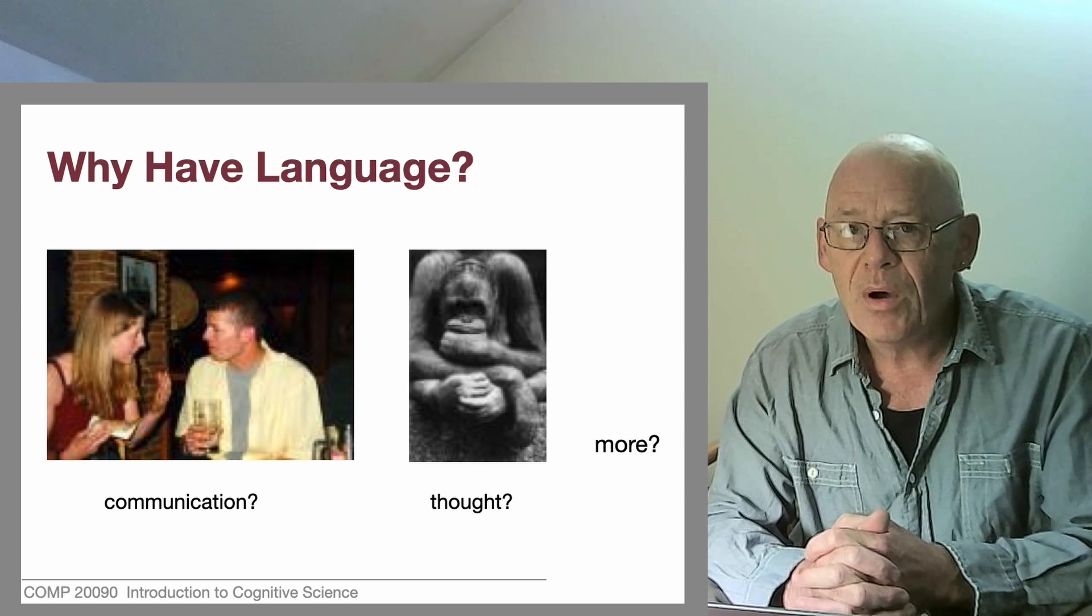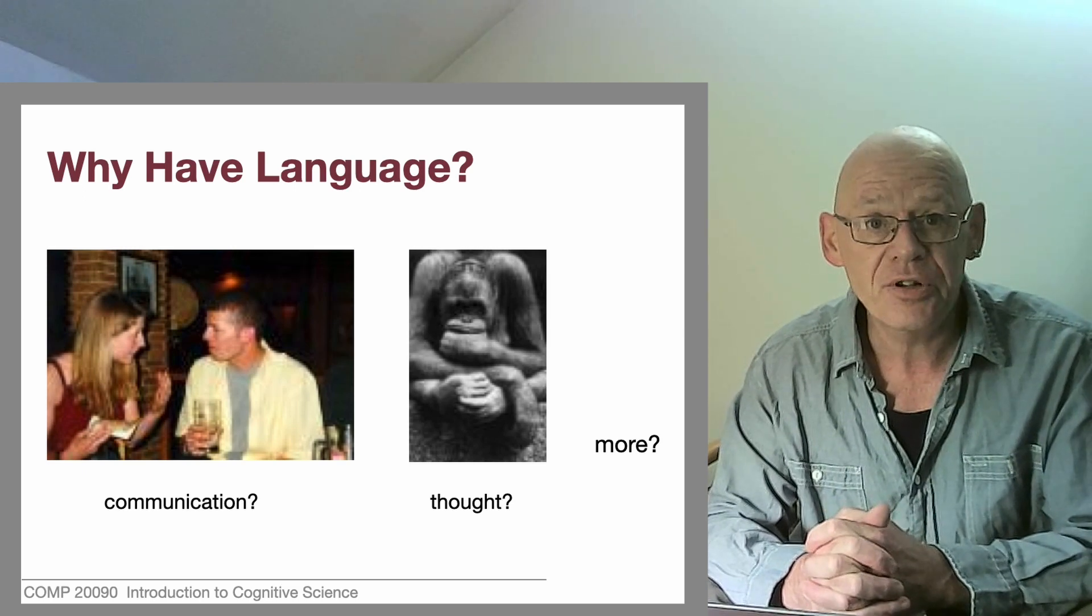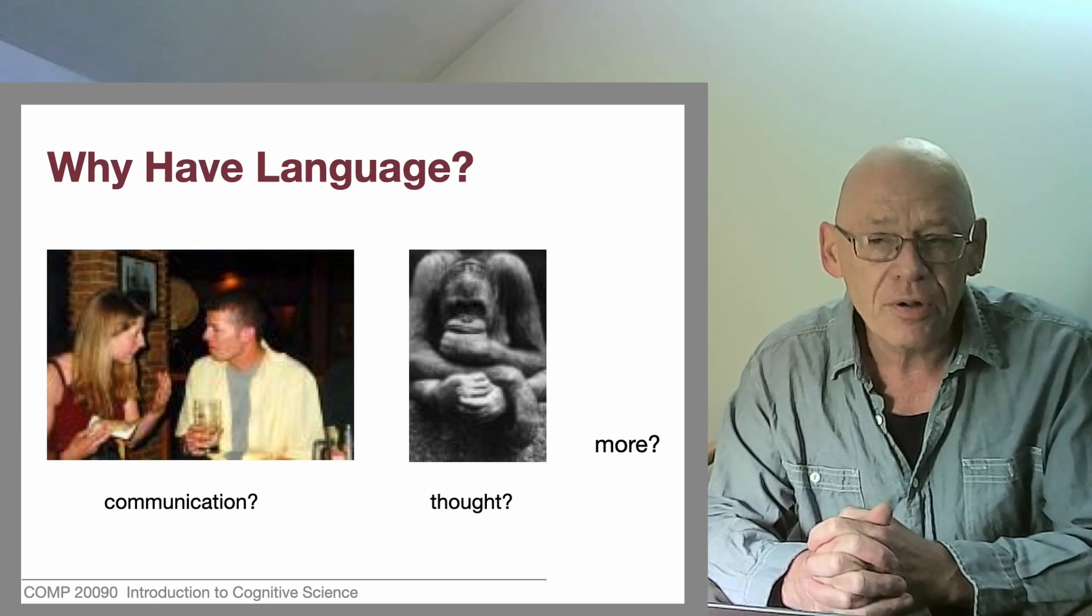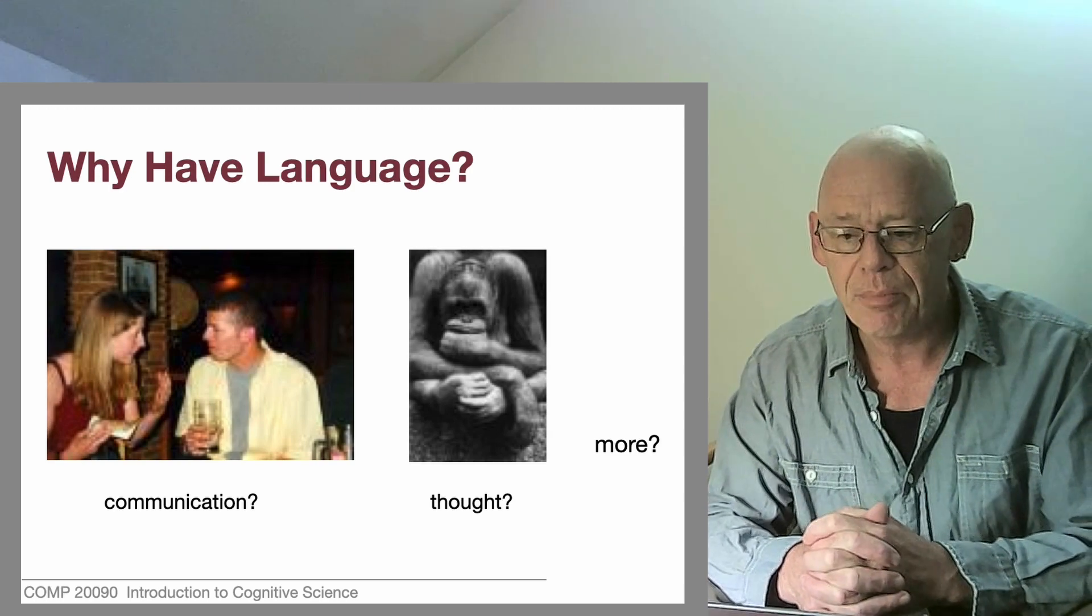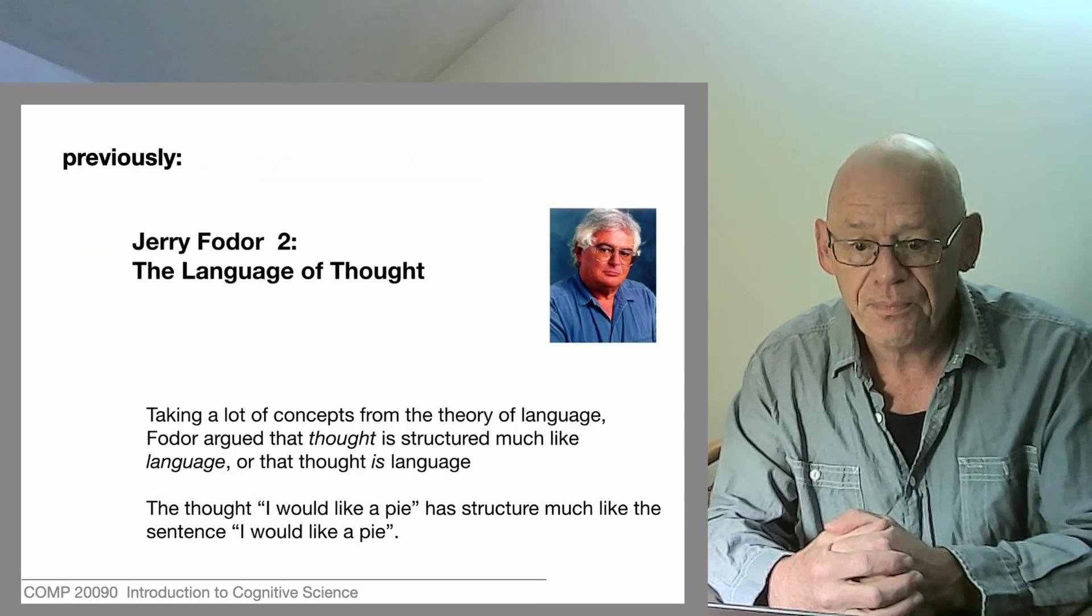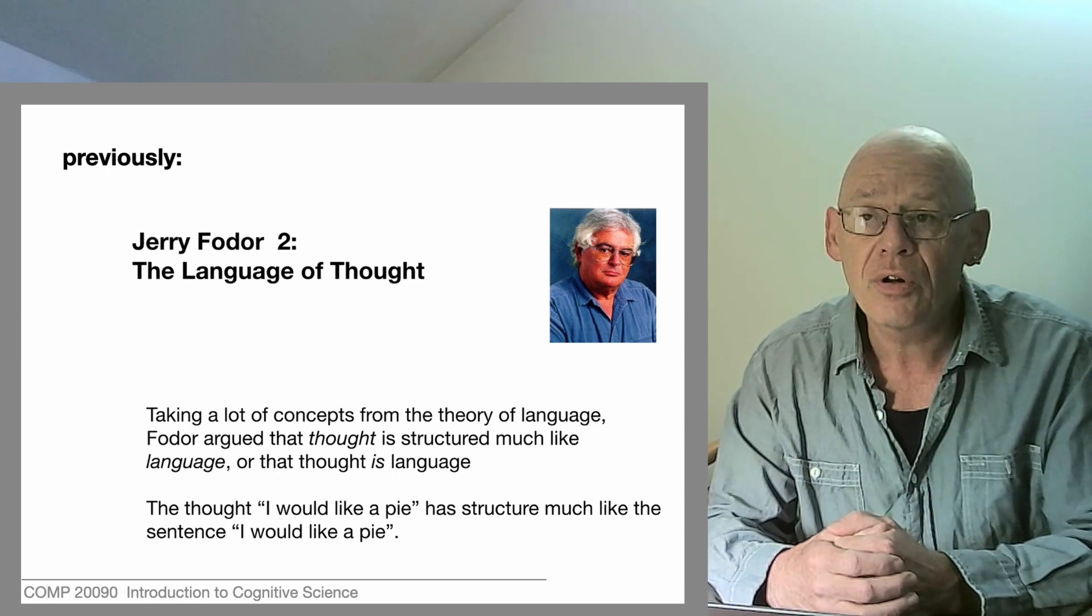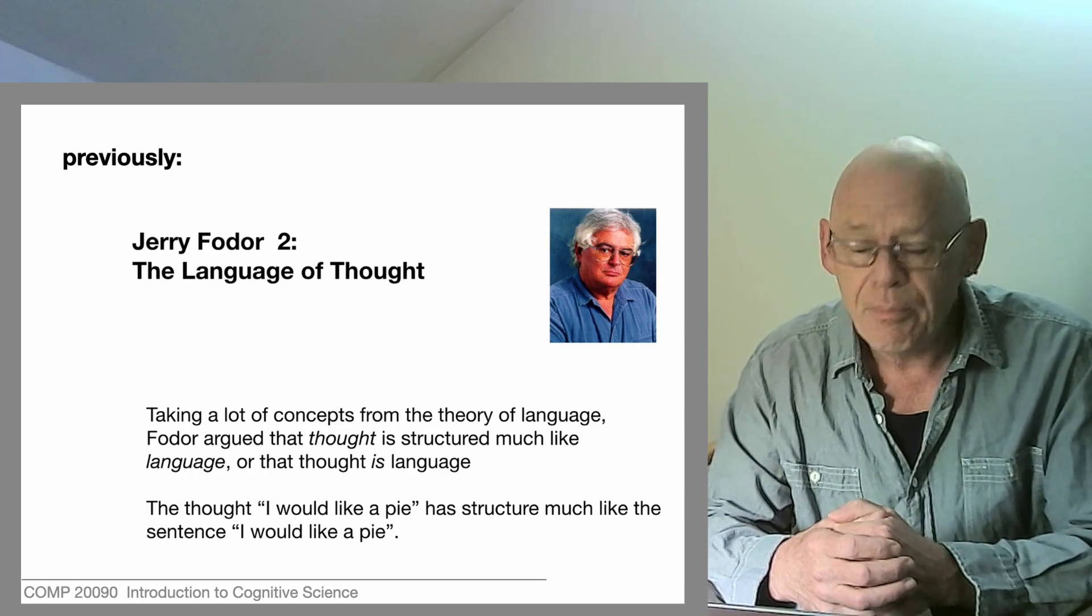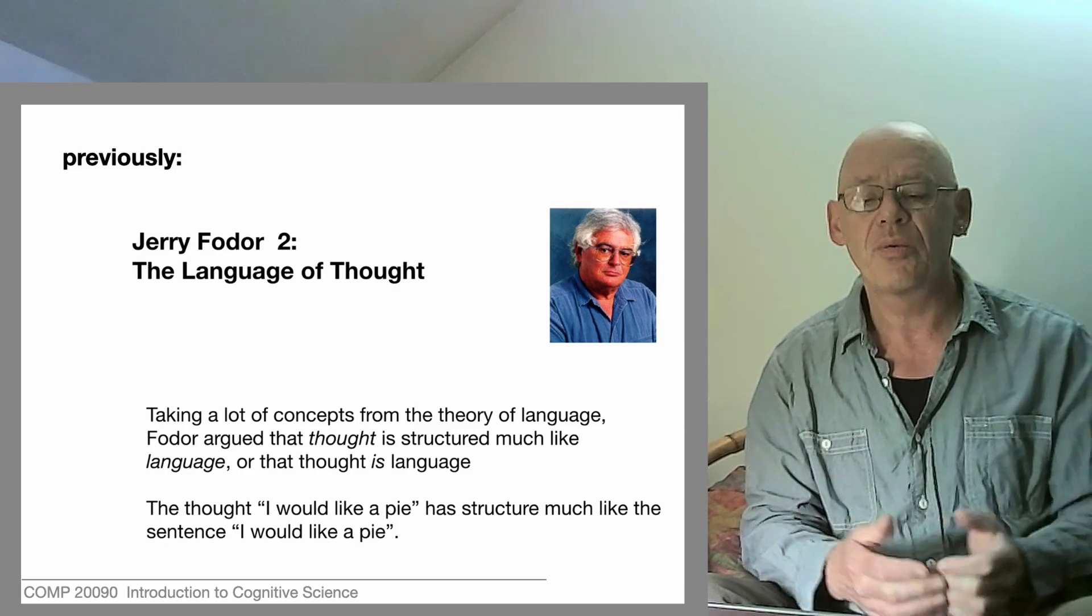Now when we briefly introduced the computational turn, that is the switch that happened after the second world war, as computers appeared on the scene and a new language of information processing became very popular, we met this guy, Jerry Fodor, whose two books, The Modularity of Mind and The Language of Thought, served to reinforce the importance of the computational metaphor, of thinking about minds in a computational way.